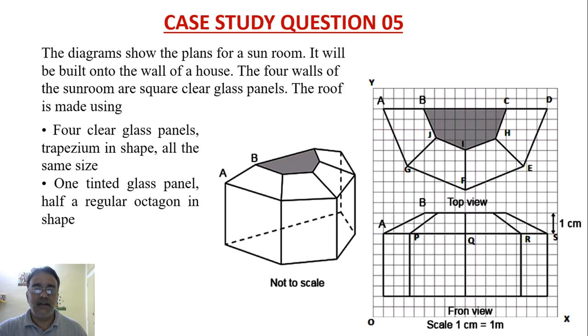The diagram shows the plans for a sunroom. It will be built onto the wall of a house. The four walls of the sunroom are square clear glass panels. The roof is made using four clear glass panels, trapezium in shape, all the same size. One tinted glass panel, half a regular octagon in shape.